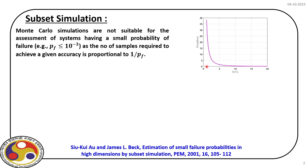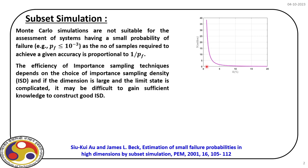That is why we always look for efficient versions of Monte Carlo simulation. One such adaptation is important sampling. Instead of taking samples from the original distributions, we define an important sampling density placed near the failure region. We first solve the problem using the first order reliability method to find the MPP, and use that as a reference point to define the important sampling density around the failure point, giving significantly more samples in the failure region.